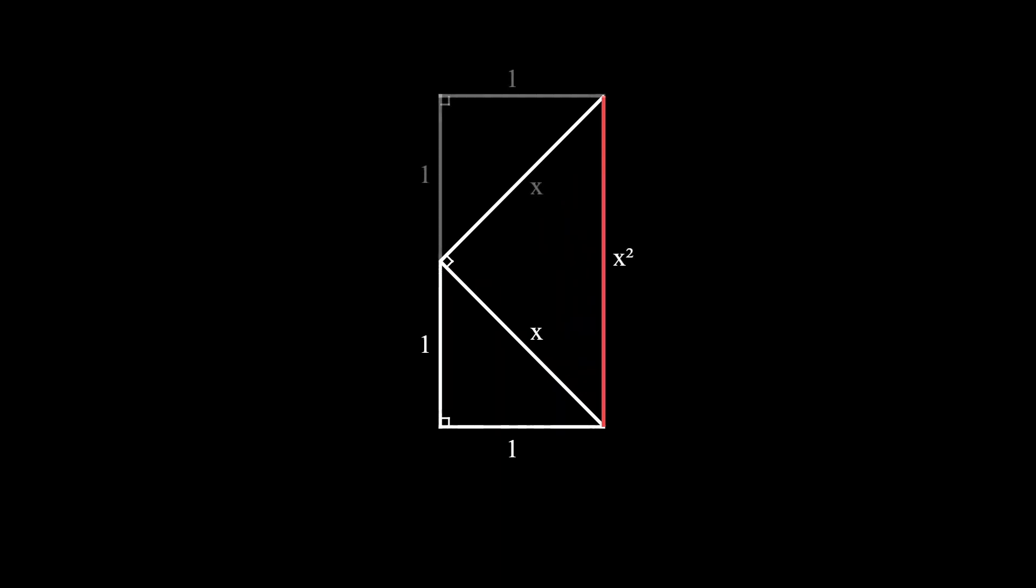Now we can put another copy of the small triangle right here with the long side of the small triangle touching the short side of the big triangle. All the angles turn out to be 45 degrees and 90 degrees, so we convince ourselves that this is a straight angle, that these are right angles, and that these opposite sides are equal. So we've got a rectangle.